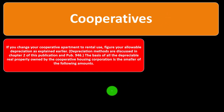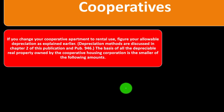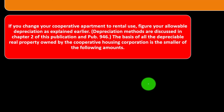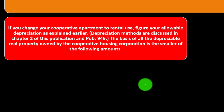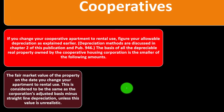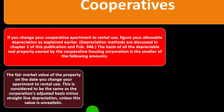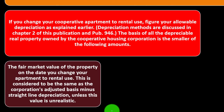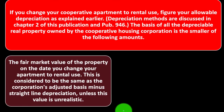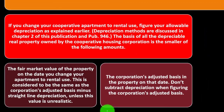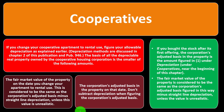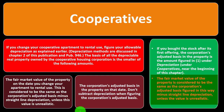Cooperatives: If you change your cooperative apartment to rental use, figure your allowable depreciation as explained earlier. Depreciation methods are discussed in Chapter 2 of this publication and in Publication 946. The basis of all depreciable real property owned by the cooperative housing corporation is the smaller of: the fair market value of the property on the date you change your apartment to rental use (considered the same as the corporation's adjusted basis minus straight-line depreciation unless unrealistic), or the corporation's adjusted basis in the property on that date without subtracting depreciation.